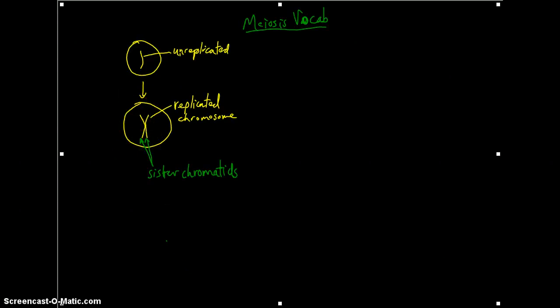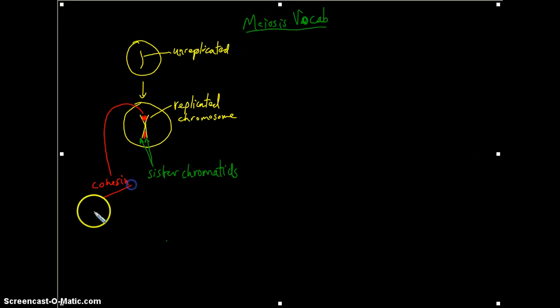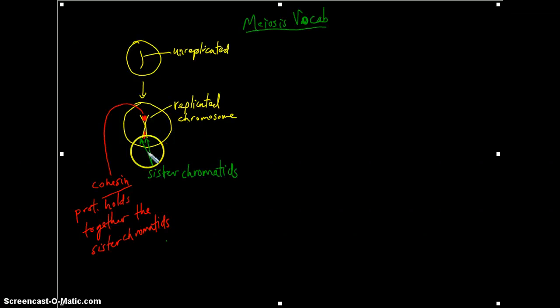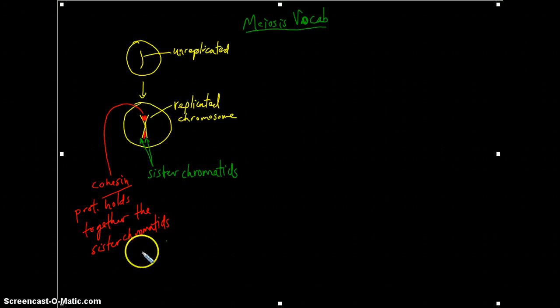Something is holding together these sister chromatids and that something is a protein called cohesin. Cohesin is a protein that holds together the sister chromatids. This is significant because cohesin will keep sister chromatids together until they need to be separated during meiosis II. They do need to be broken down before sister chromatids can separate.